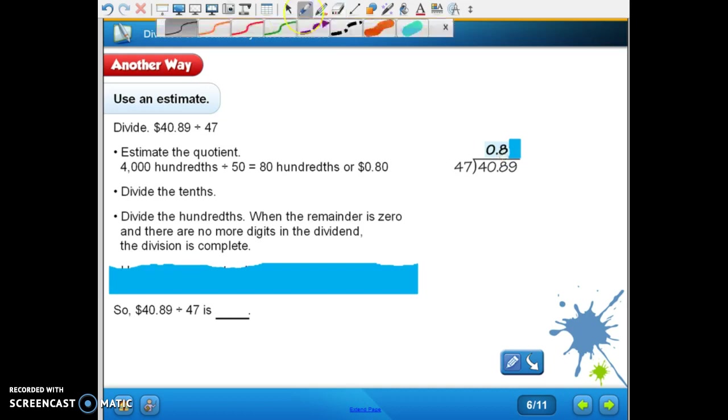What is forty-seven times eight? What's eight times seven? Fifty-six. Regroup the five. Eight times four is thirty-two, plus five is thirty-seven. So we can subtract that. We have to do a little regrouping here. Eight minus six is two. We can't have zero minus seven. So now we're going to do our regrouping. Ten minus seven is three. Then three minus three is nothing.